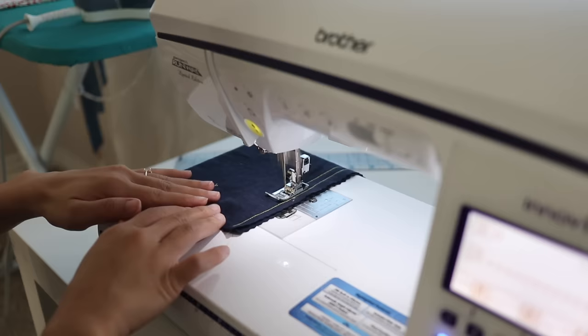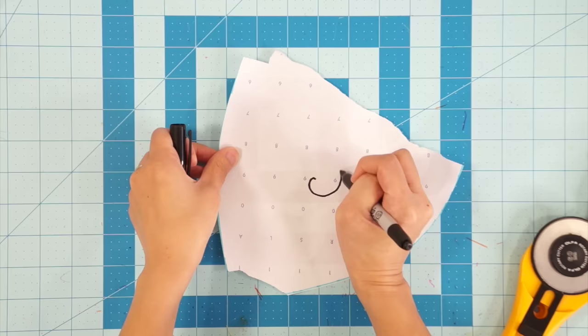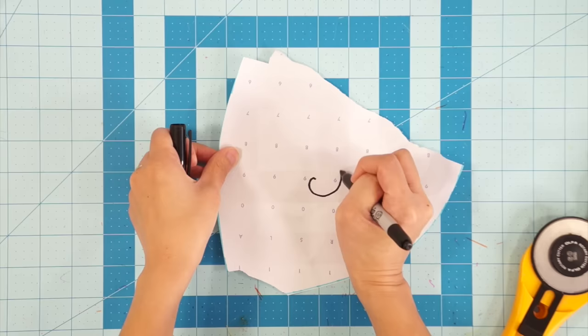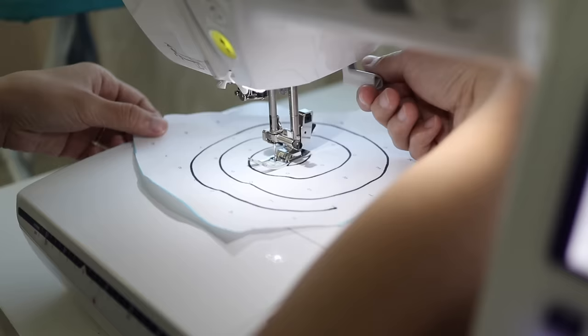My last tip is for sewing curves. Eventually you're going to graduate from your straight seam sewing projects to something with more curves. A great practice is to draw a spiral on a piece of paper, take out the thread from your machine and sew along the curve.